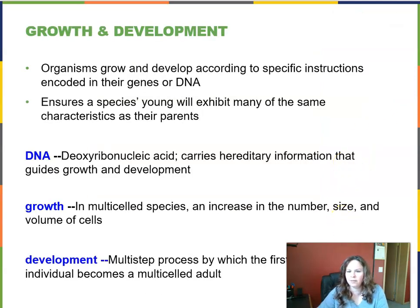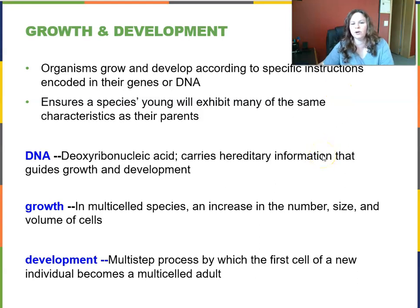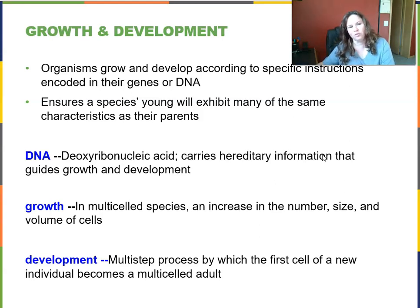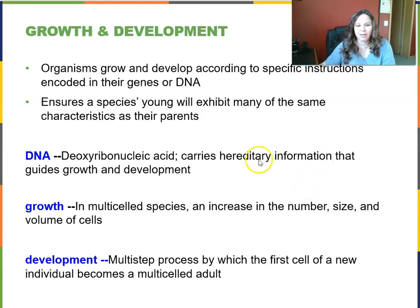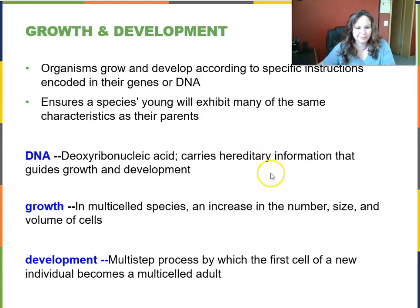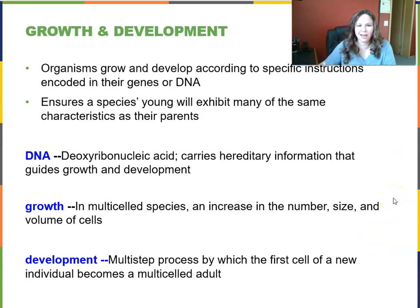Growth and development is next on our list. Organisms grow and develop according to specific instructions encoded in their genes or DNA — the genes tell cells what to do and when to do it. This ensures a species' offspring will exhibit many of the same characteristics as their parents. I encourage you to stop and make sure you know what the key terms on this slide mean.